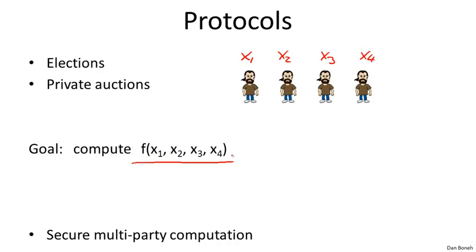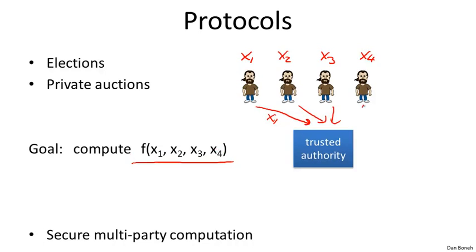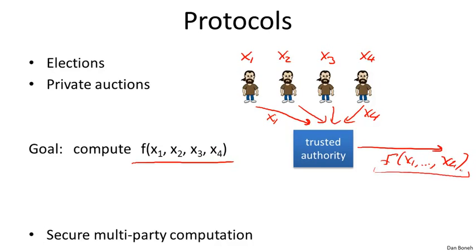A simple but insecure way is to introduce a trusted party. This trusted authority collects individual inputs, promises to keep them secret so only it knows what they are, and then publishes the value of the function to the world. The idea is that the function's value becomes public while nothing else about individual inputs is revealed. But of course, you have to trust this authority, and if it's not trustworthy, you have a problem.